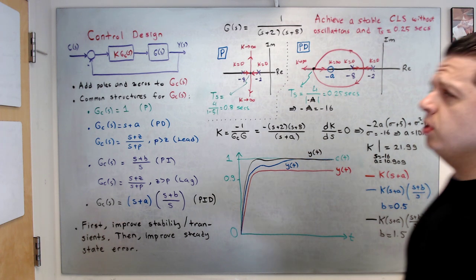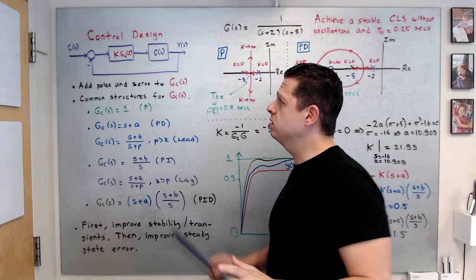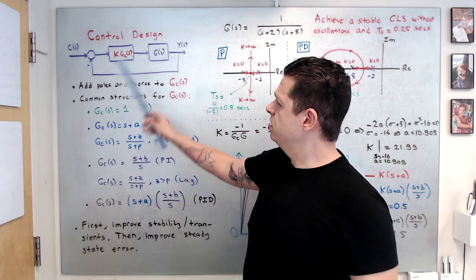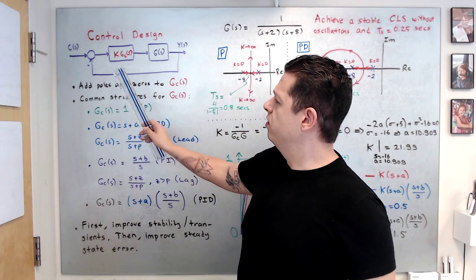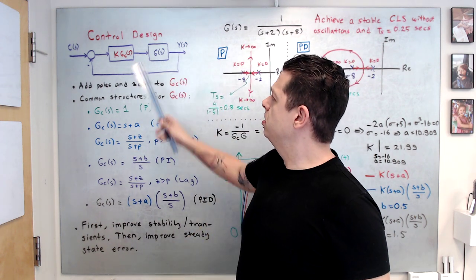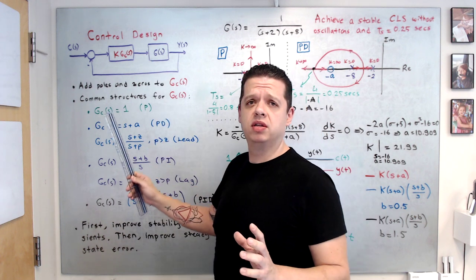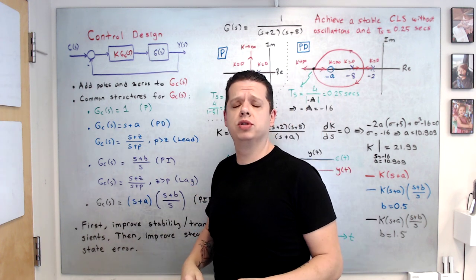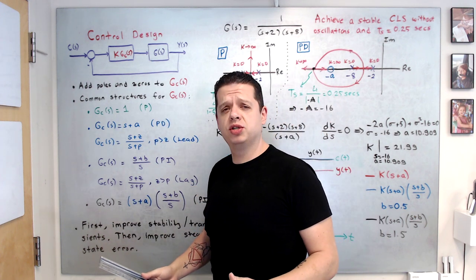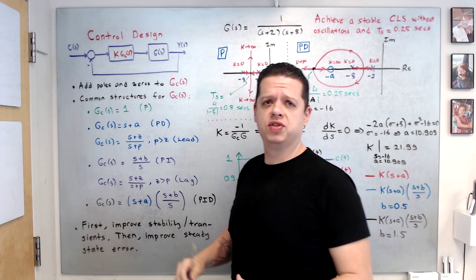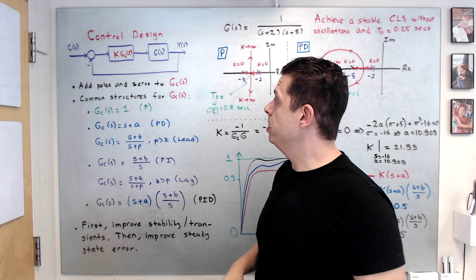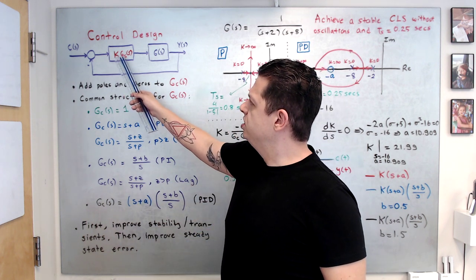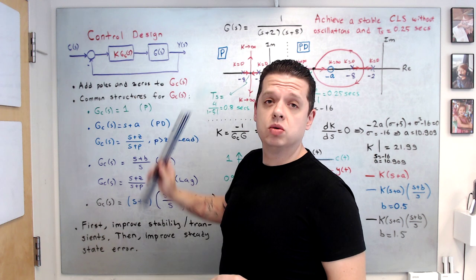I'm going to talk today about control design. Consider this feedback configuration. G is the plant transfer function — you model it using an ordinary differential equation, then transfer to the Laplace domain. And here, k multiplied by gc is the controller.